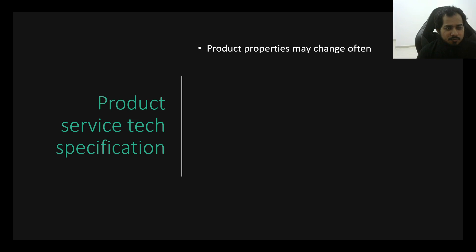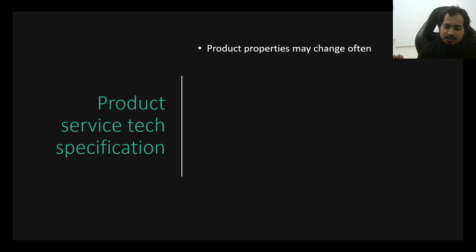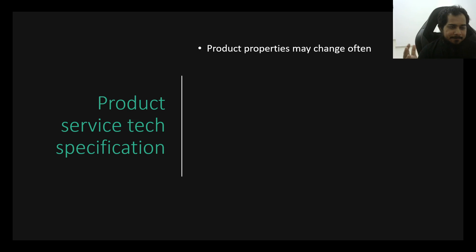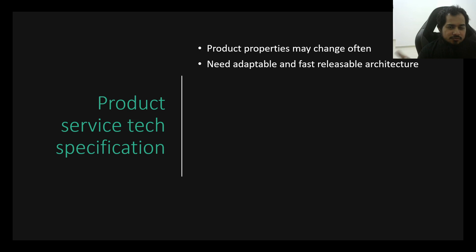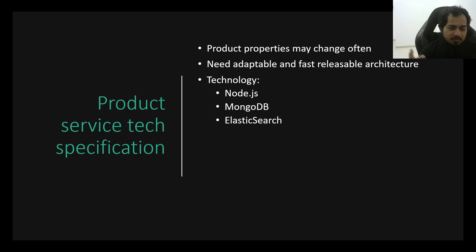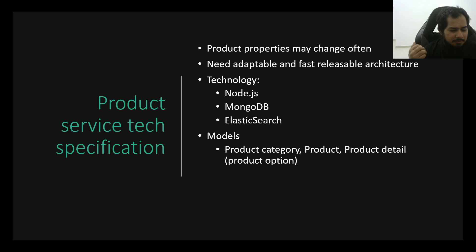With so many different types, customers may see the same type of product from different angles. So if you are using Node.js with MongoDB, Elasticsearch, Query Zone, and Model Zone — Product, Category, Product Detail — you can use that setup.